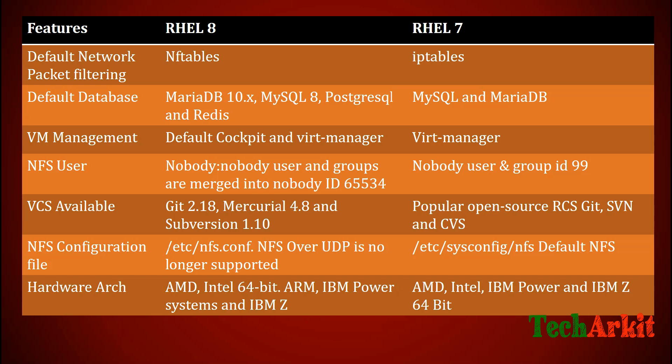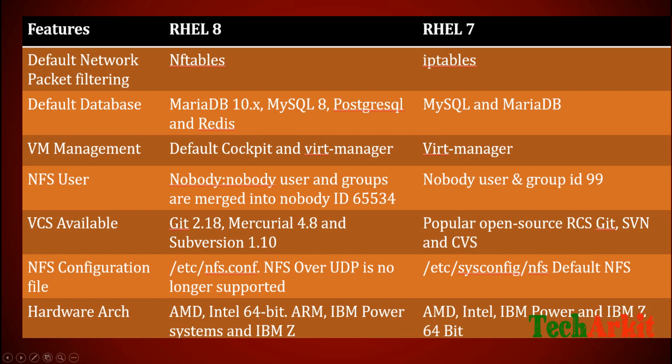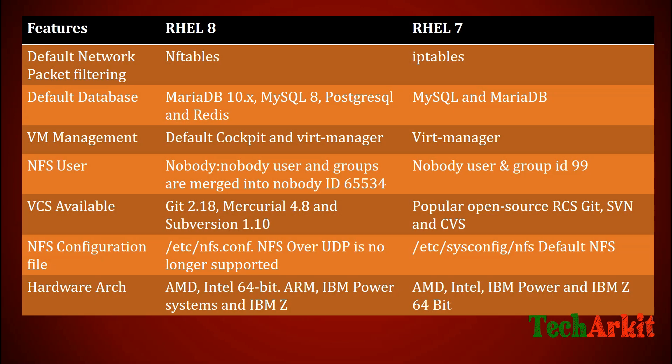The iptables system was there in RHEL 7, but in RHEL 8 it is completely modified. There is much improvement in the firewall rules — you can write rules using the firewalld with firewall-cmd commands or the firewall-config graphical management tool.